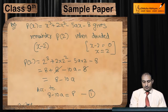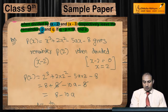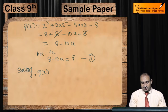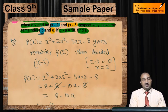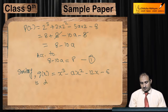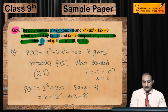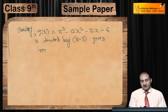Similarly, let q(x) = x³ - ax² - 12x - 6. When divided by x - 3, it gives remainder q(3).